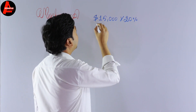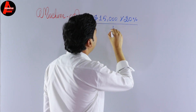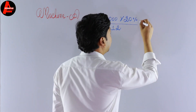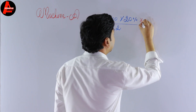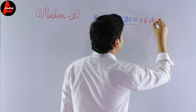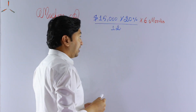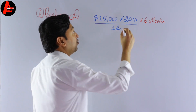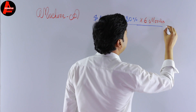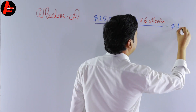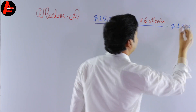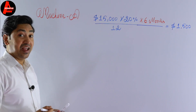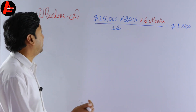Dividing the annual depreciation by 12 and multiplying by 6 gives us $1,500. So the depreciation for Machine A in 2017 is $1,500.